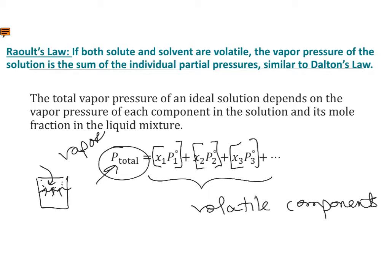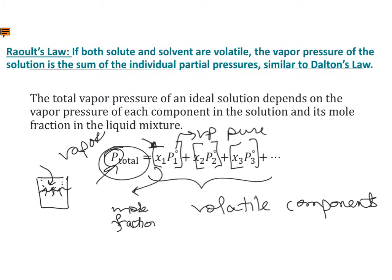X, as always, is the mole fraction of that volatile component, and P is the vapor pressure of that component in its pure state. Raoult's Law is basically saying that the vapor pressure of a solution is only going to be a fraction of what it would be if it were the pure solvent.